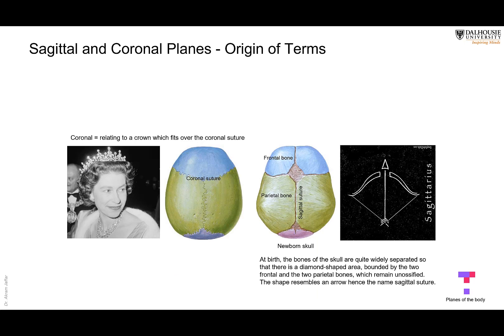The term coronal comes from the coronal suture — visible here in the superior view of the skull — because this is where the crown is put on the head. From this comes the coronal plane dividing the body into anterior and posterior parts. The skull of a newborn shows these sutures accompanied by soft spots on the head. This arrangement gives the impression of an arrow — sagitta in Latin — and so it is called the sagittal suture, from which came the sagittal plane.